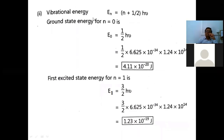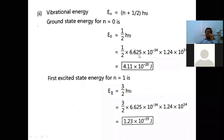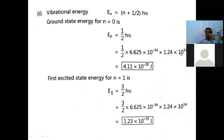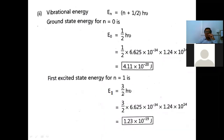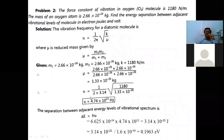Next, we find the energies using En = (n + ½)hν. For the ground state n = 0: E0 = ½hν. Putting h = 6.625 × 10⁻³⁴ J·s and ν = 1.24 × 10¹⁴ Hz, we get E0 = 4.11 × 10⁻²⁰ J. For the first excited state n = 1: E1 = (3/2)hν, giving E1 = 1.23 × 10⁻¹⁹ J.